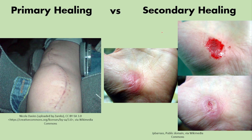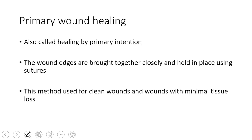Hello everyone and welcome to a new video. Here we will talk about the differences between primary wound healing and secondary wound healing. We have pictures as examples for the two types. In the first picture is an example of primary wound healing, where the wound edges are approximated together and left until they heal. In the second example, the wound is left without any procedure and heals by secondary intention.